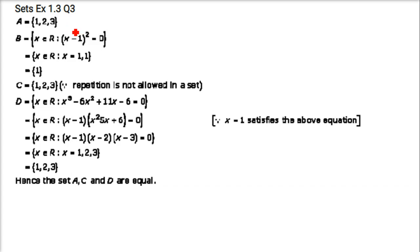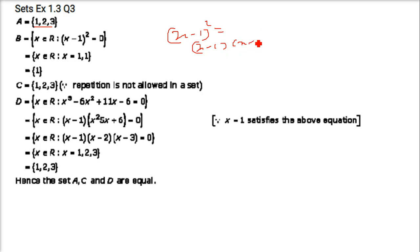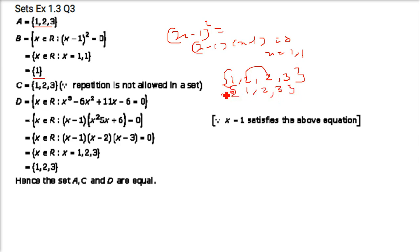The next question asks which of the following sets are equal. Equal sets have exactly the same elements and the same count. Set A = {1, 2, 3}. Set B: (x−1)² = 0 gives x = 1 only, so B = {1}. Set C = {1, 1, 2, 2, 3} — removing repeats gives {1, 2, 3}. So A and C are equal.